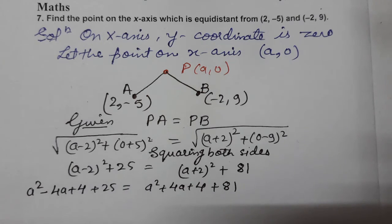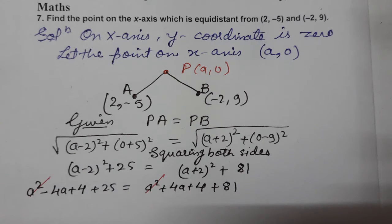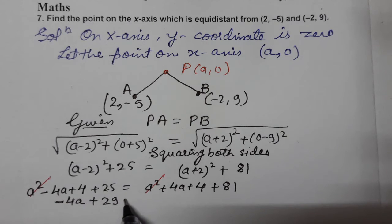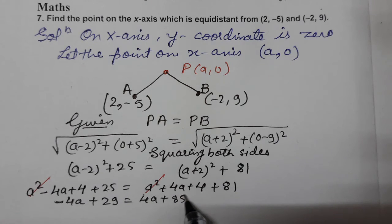Now cancel the like terms: a² cancels with a² on both sides. So we get: −4a + 29 = 4a + 85. Here 25 + 4 = 29 on the left, and 81 + 4 = 85 on the right.